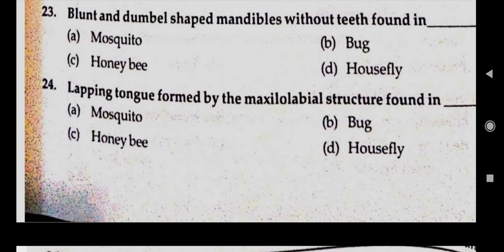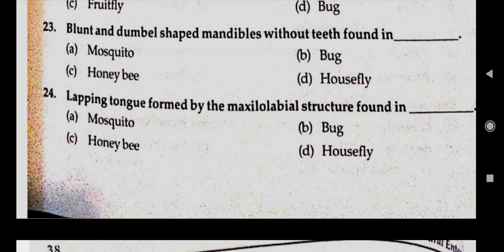Question number twenty-three: blunt and dumbbell shaped mandibles without teeth found in. Answer C, honeybees. Question number twenty-four: lapping tongue formed by the maxillolabial structure found in. Answer C, honeybees.